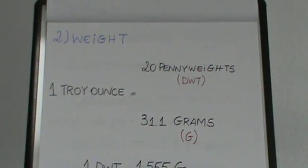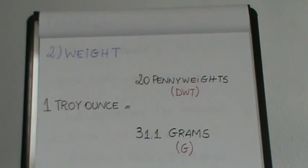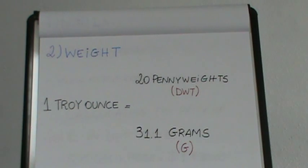The second input will be weight. Precious metals are weighed in troy ounces. They're different from regular ounces. Troy ounces are broken down into either 20 pennyweights or 31.1 grams, depending on what type of calculation you want to use.